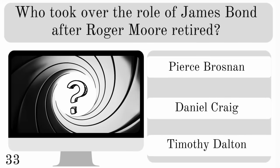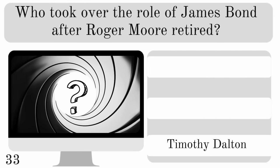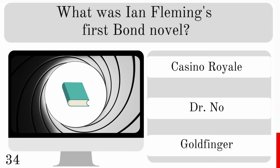Who took over the role of James Bond after Roger Moore retired — Pierce Brosnan, Daniel Craig or Timothy Dalton? It was Timothy Dalton. So what was Ian Fleming's first Bond novel — Casino Royale, Doctor No or Goldfinger? There's an extra bonus point if you can name the famous children's book he wrote. The answer is Casino Royale.